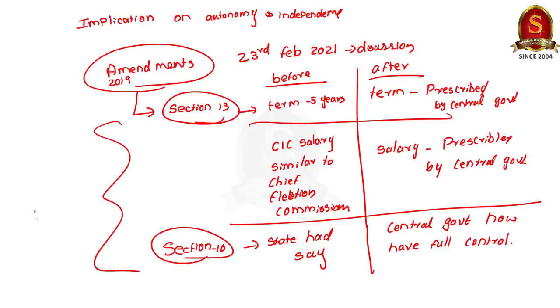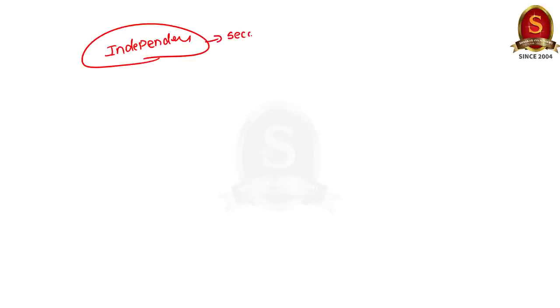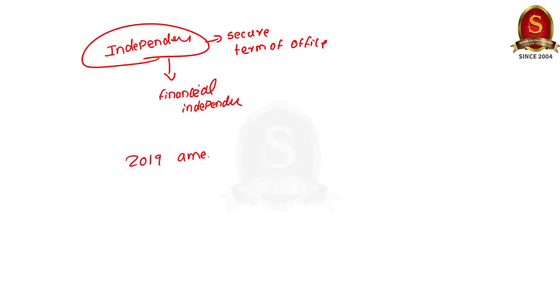By looking at these amendments, you can clearly see the issue at hand. For any institution to stay independent and have autonomy, it must have two things: first, its term of office must be secure; second, it must be financially independent — its salaries and allowances must not be controlled by another institution. The 2019 amendment removed both these aspects from the Information Commission. It removed security of tenure and security of salaries. Earlier, the salary of the Chief Information Commissioner was linked to the salary of the Chief Election Commissioner. This part is now removed. By removing both these aspects, the amendment affects the autonomy and independence of the institution.